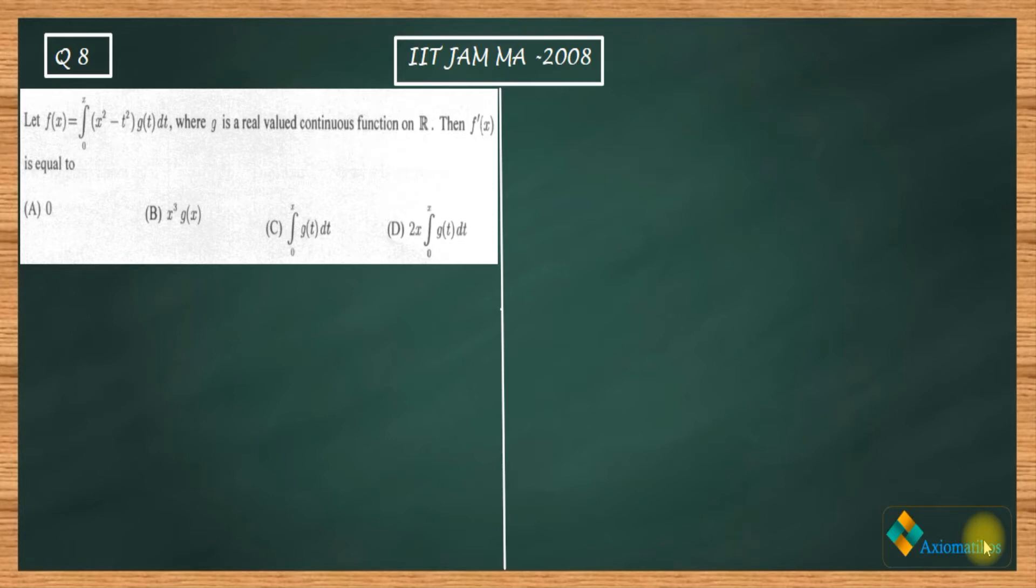What it says is we have f(x) equal to this integral. The integral is of an integrand which is a two-variable function, where g is a real valued continuous function on R. Then f'(x) is equal to...